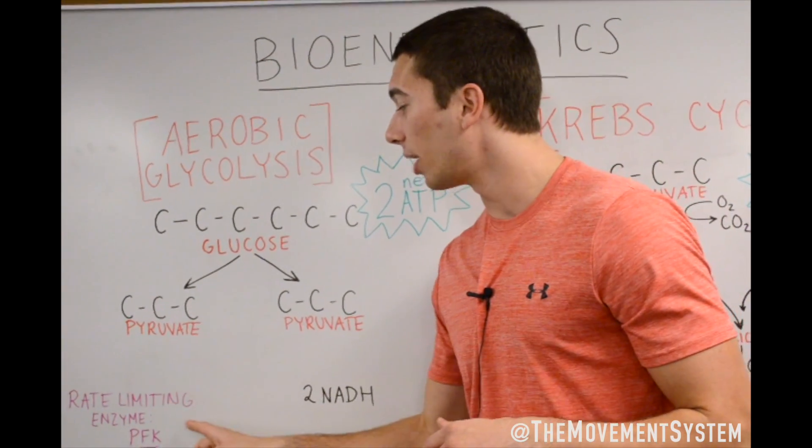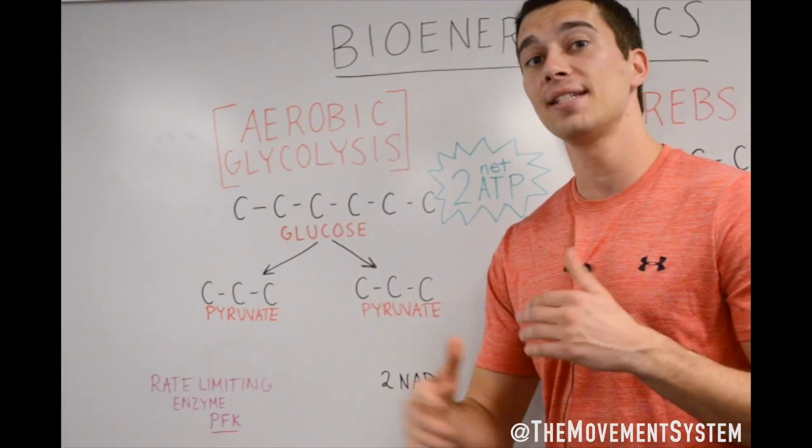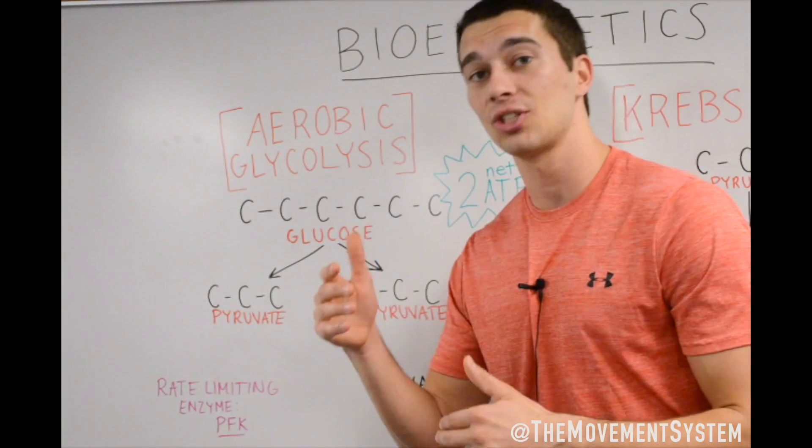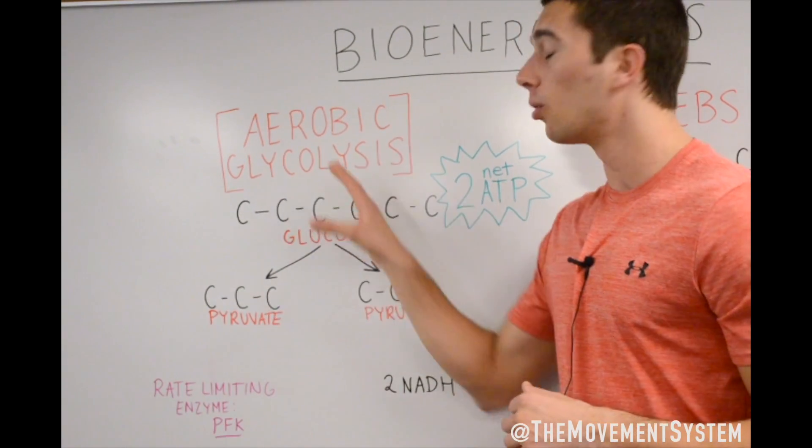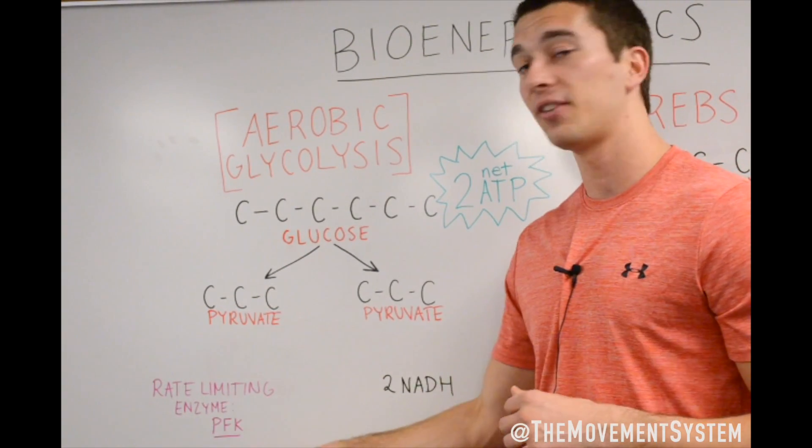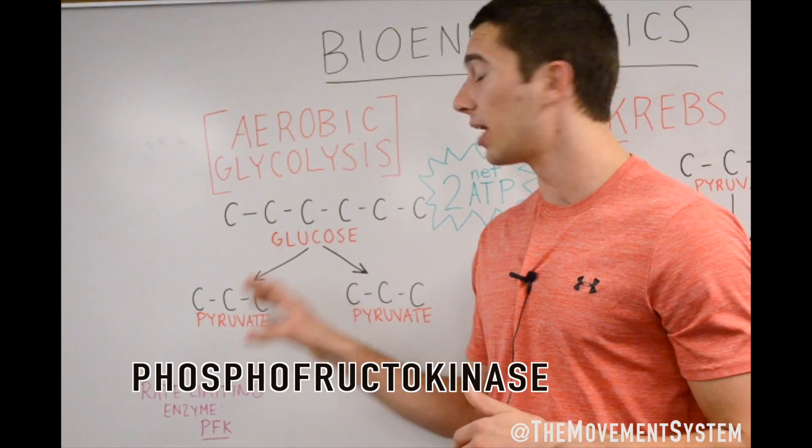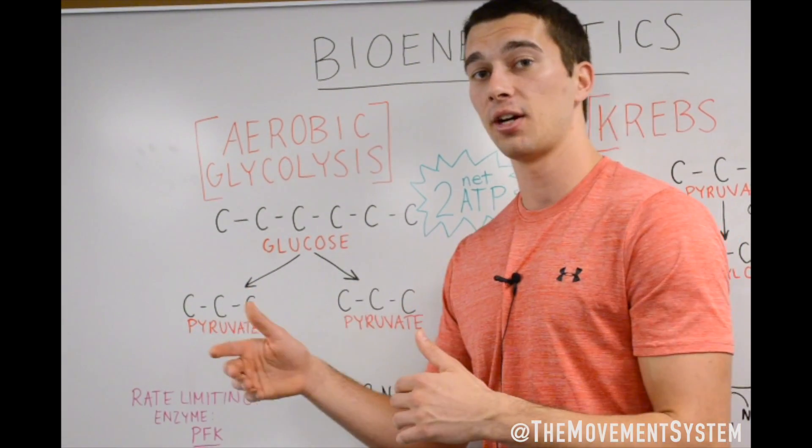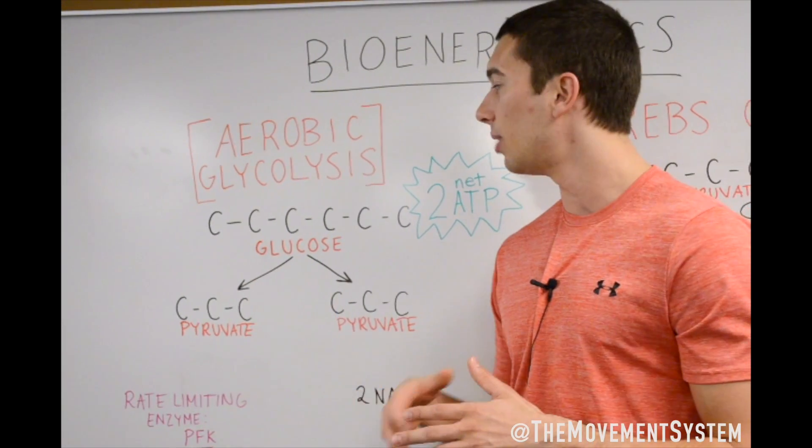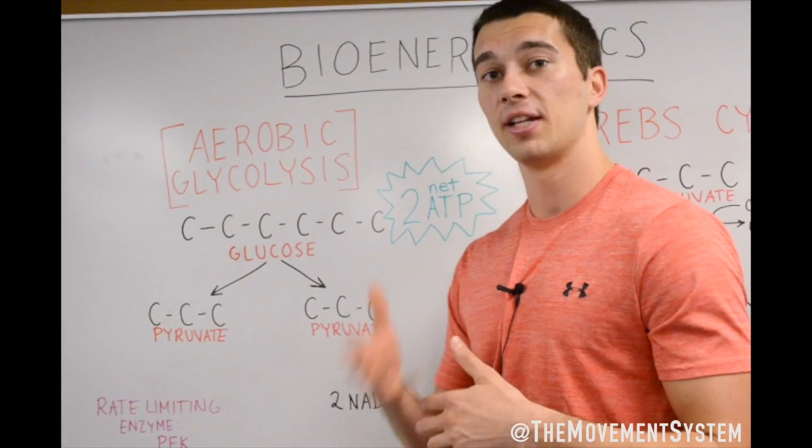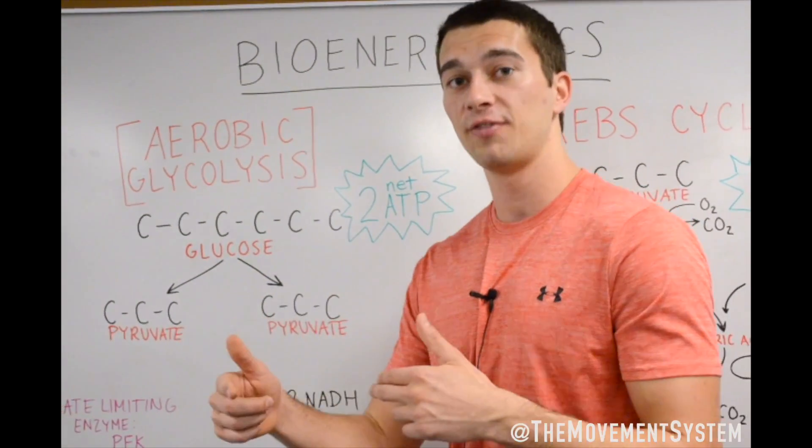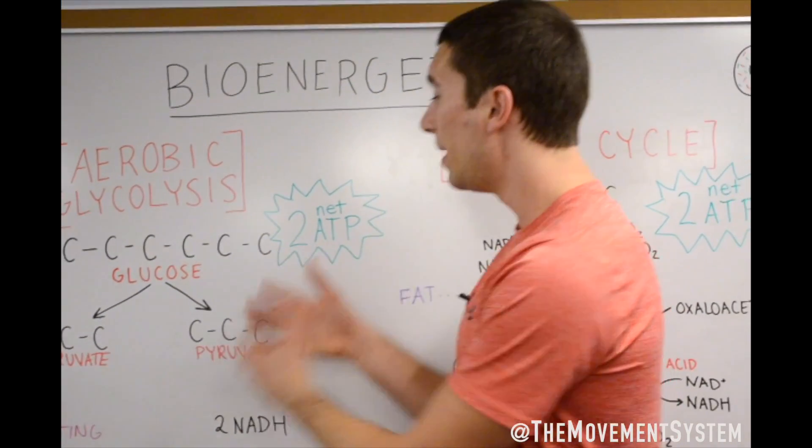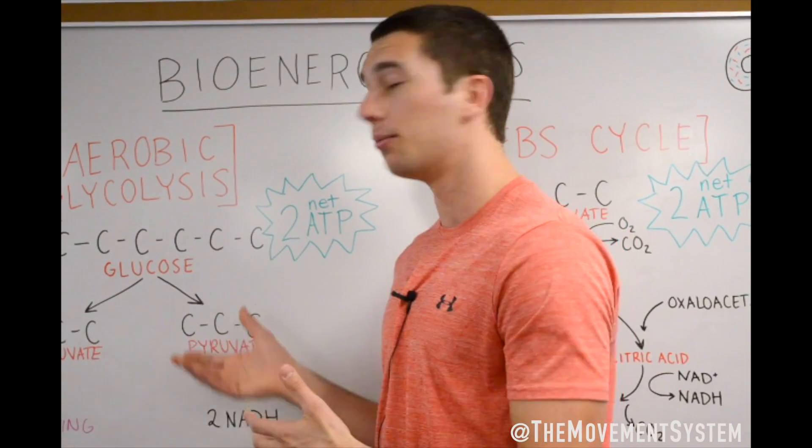And one other thing to point out, the rate-limiting enzyme, so enzyme is basically something that makes something go faster. The rate-limiting enzyme for glycolysis is PFK, which stands for phosphofructokinase. It's basically the thing that limits the speed of glycolysis. So the more phosphofructokinase you have from training and whatnot, if that's upregulated, you can do glycolysis faster, which means that you can make more of this product to then create more energy.